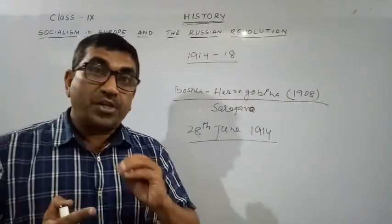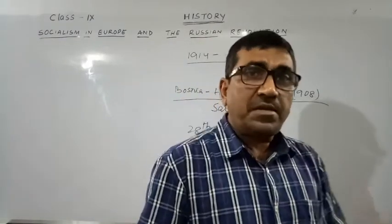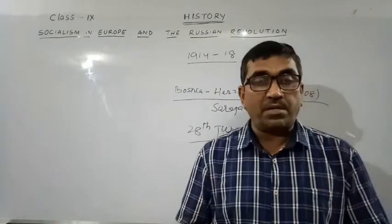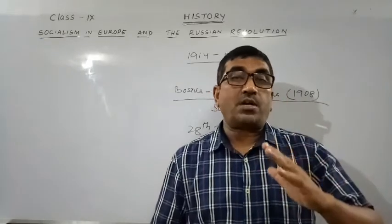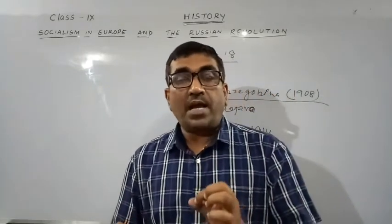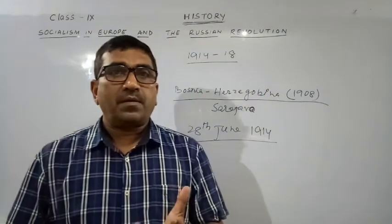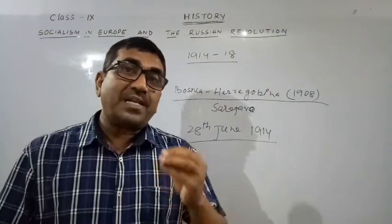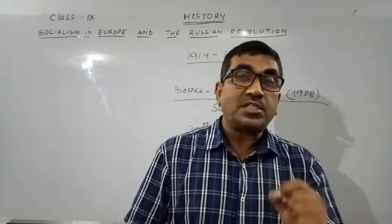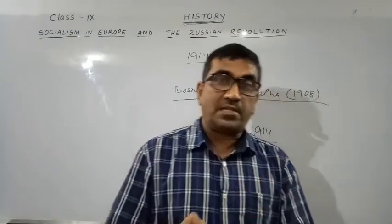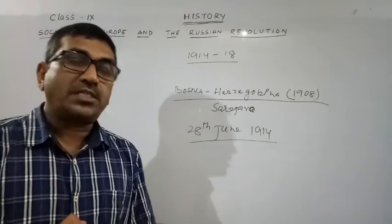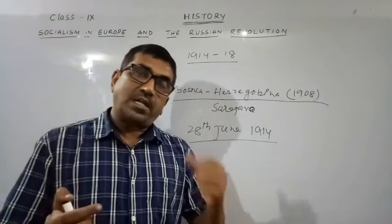Gavrilo Princip suffered from tuberculosis in jail — at that time, about 100 years ago, tuberculosis was the most dreaded disease. He had to have his hand amputated. He ultimately committed suicide in jail using his cloth and towel. He was not hanged to death; he killed himself.